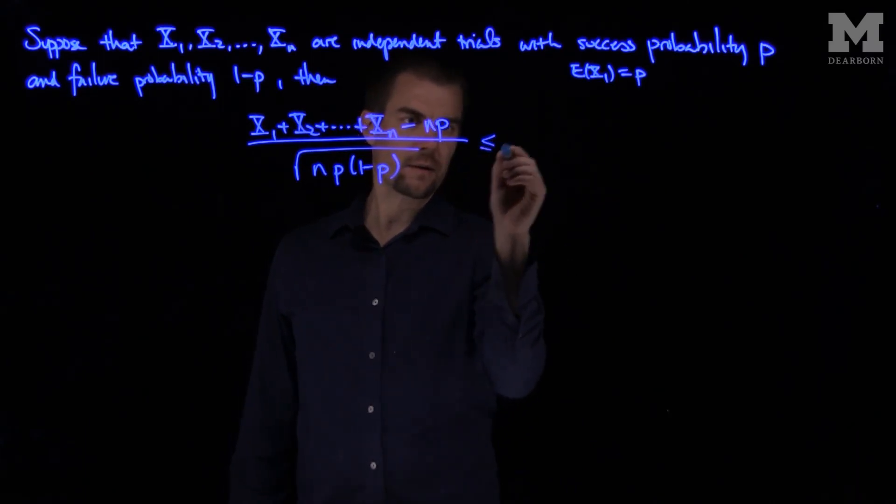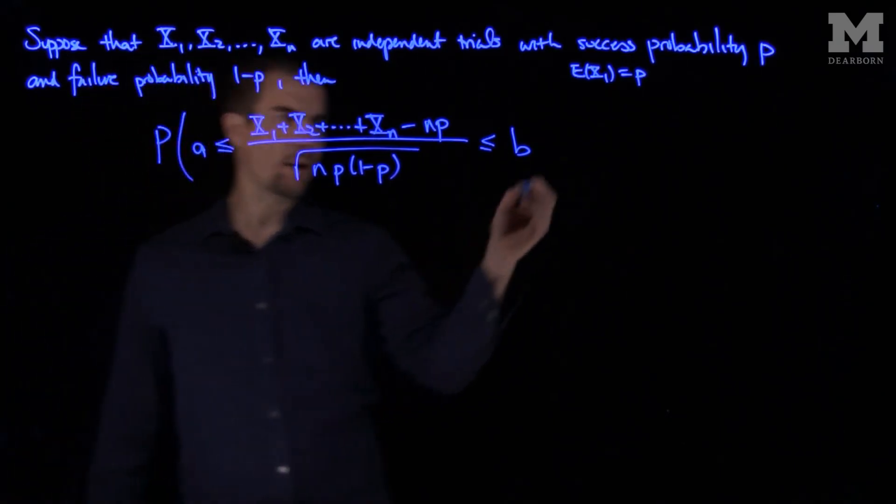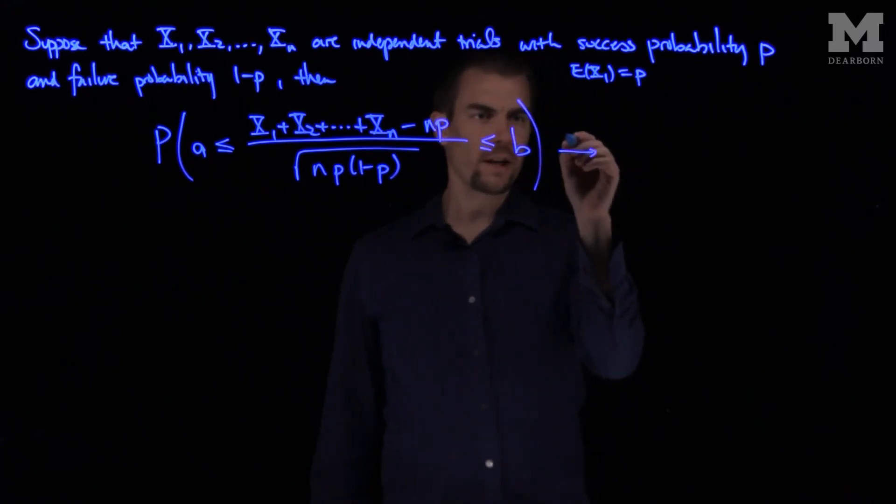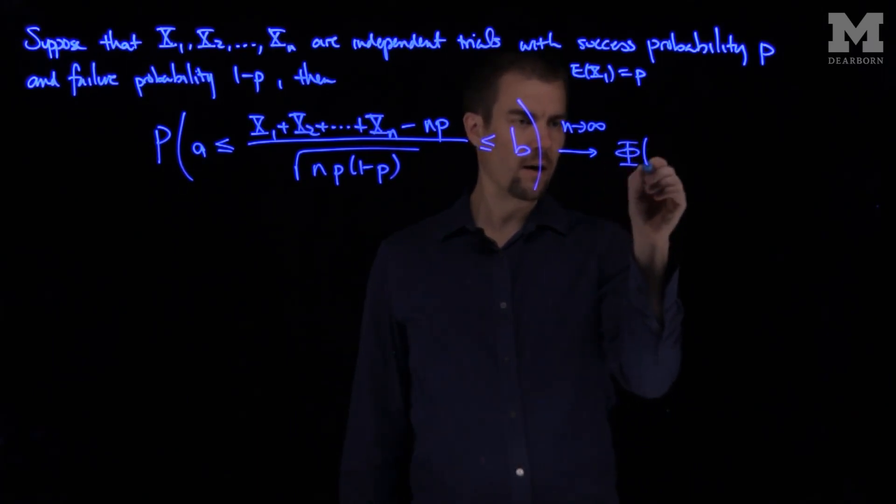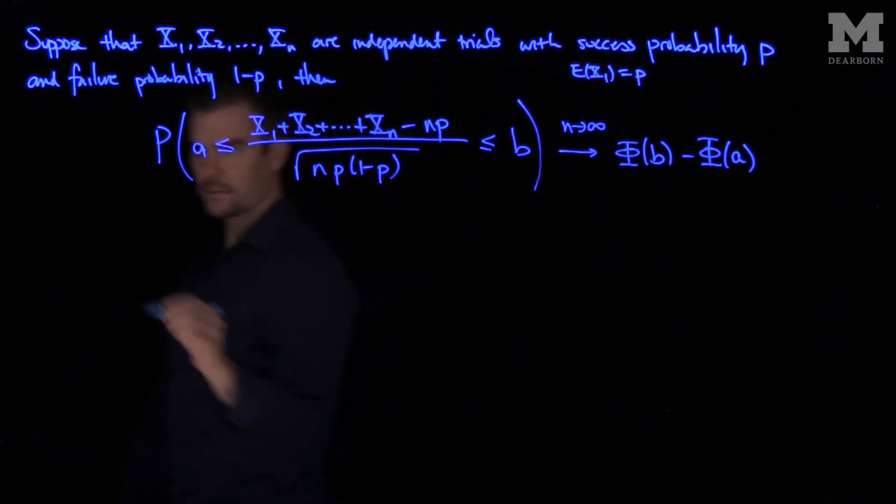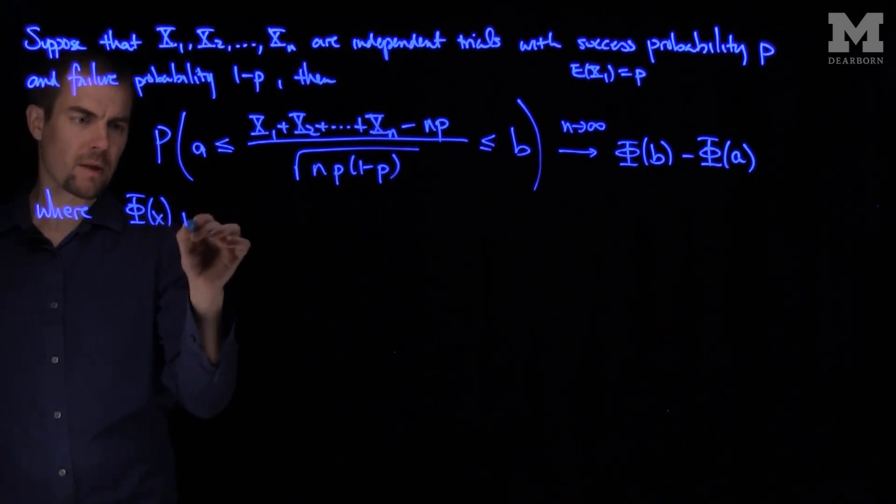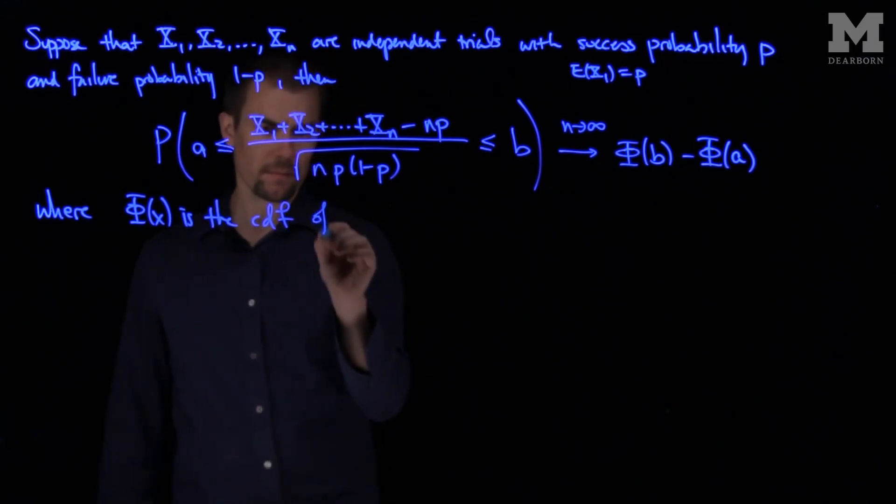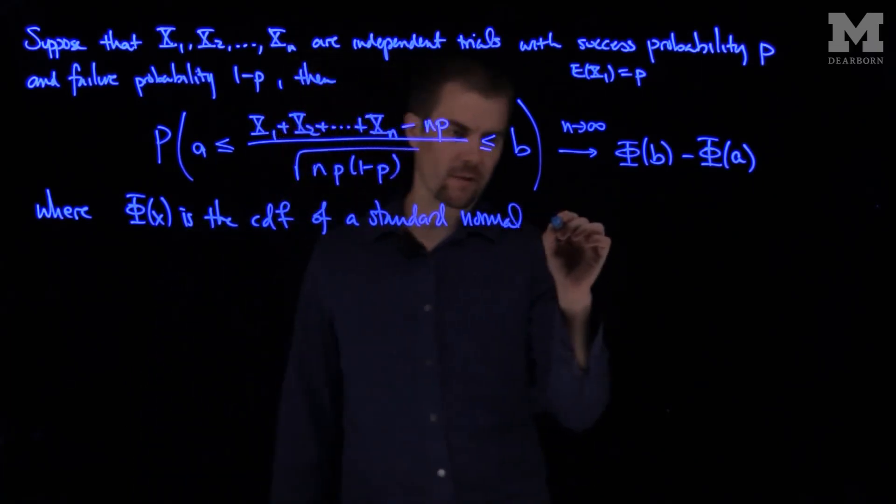If I consider the probability that that ratio is between a and b, I will know as n goes to infinity, this will converge to phi of b minus phi of a, where phi is the CDF of the standard normal random variable.